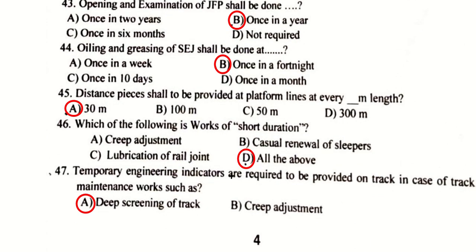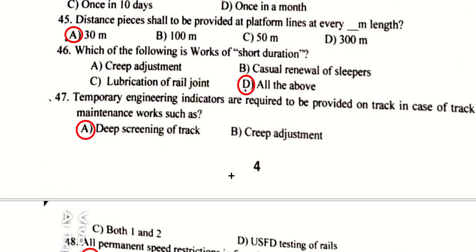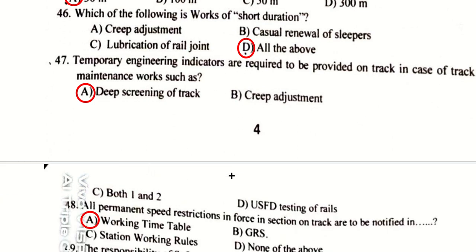Distance pieces shall be provided at platform lines at every 30 meters. Creep adjustment, lubrication of rail joints, and casual renewal of sleepers are all works of short-duration maintenance, so D (all of the above) is the right answer.